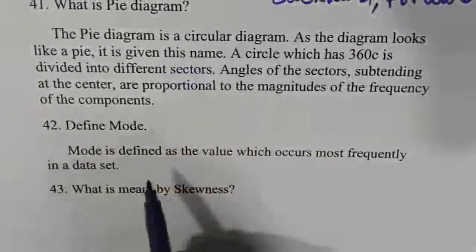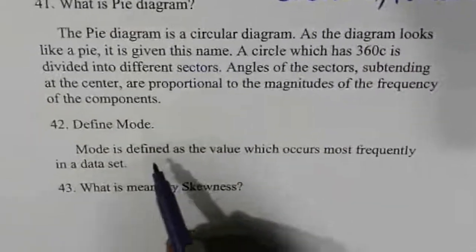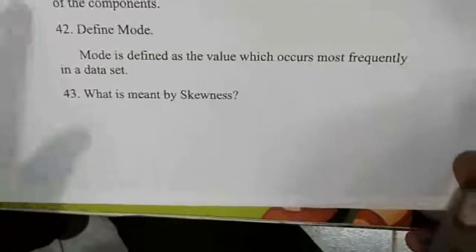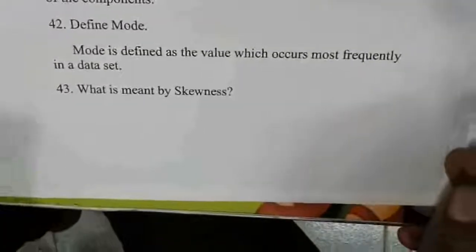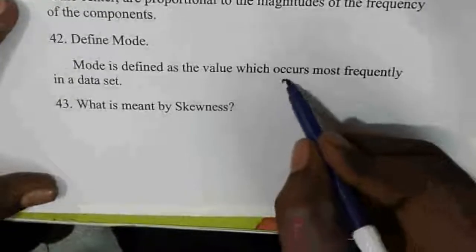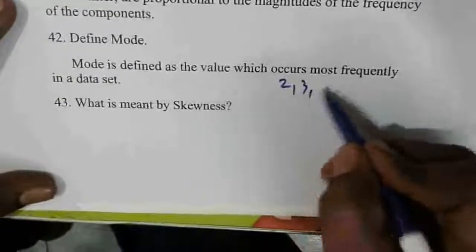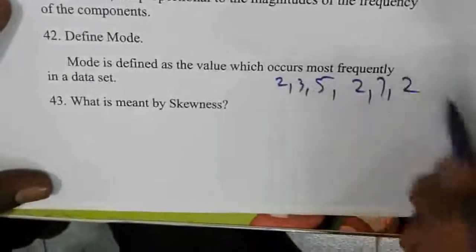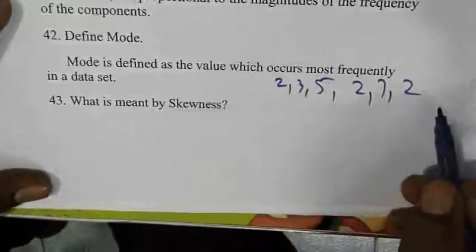Mode is nothing but the repeated value in data. The number that appears most often is called the mode. For example, in the data set 2, 3, 5, 2, 7, 2, the number 2 is repeated three times, so mode equals 2.